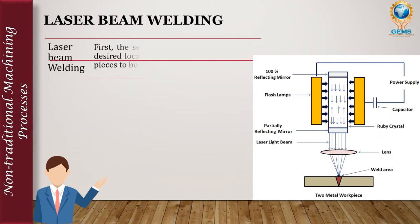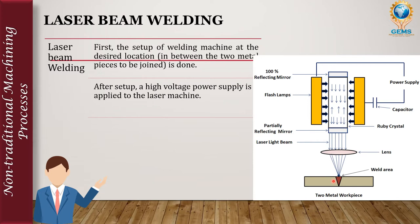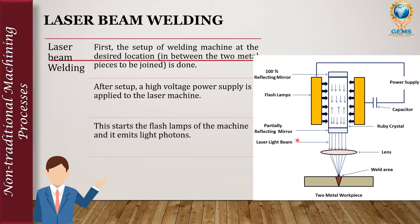The first step in laser beam welding is the setup of the laser beam machine at the desired location between the two metal pieces to be joined. After setup, a high voltage power supply is connected to the laser machine — one connection goes to the flash lamp and another to the capacitor.